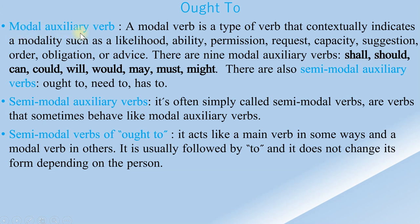A modal auxiliary verb is a type of verb that contextually indicates a modality such as likelihood, ability, permissions, requests, capacity, suggestions, or advice. There are nine modal auxiliary verbs: shall, should, can, could, will, would, may, might, and must.